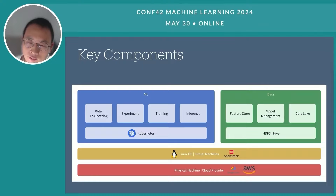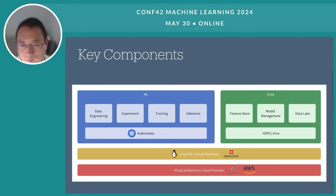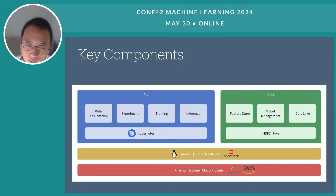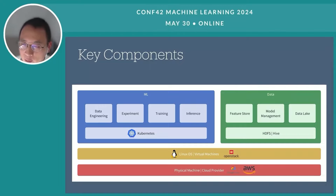The data part is also an indispensable component of the machine learning platform. Data-related subparts usually include a feature store, model management, and a data lake. The feature store is responsible for storing and serving feature data consistently across training and inference to ensure reproducibility. Model management involves tracking and versioning machine learning models, driving collaboration, and managing model deployment pipelines. The data lake serves as a centralized repository for storing vast amounts of raw and processed data, enabling efficient data retrieval and analysis.